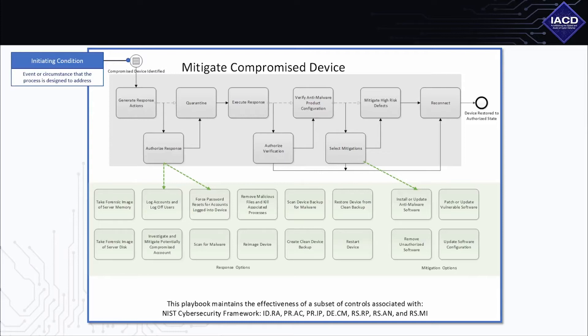The purpose of an initiating condition is to identify the event or circumstance that the documented security process is designed to address. Since playbooks should be generalized for broad applicability across organizations, they should include an initiating condition that triggers the playbook but exclude the mechanism that created it — because including the mechanism would add extraneous detail and require creating and maintaining more playbooks specific to each mechanism. Organizations can use generalized playbooks to develop multiple workflows, with further specialization possible based on sectors, technologies, regulatory bodies, or other market discriminators.